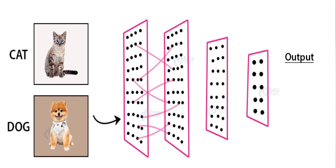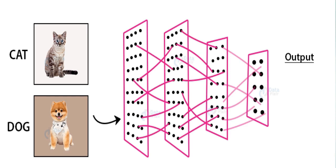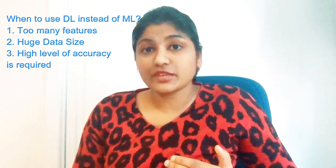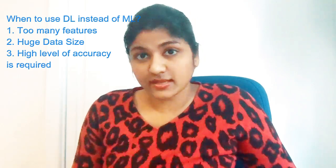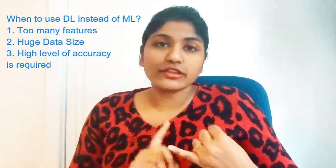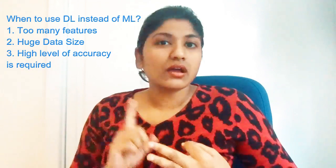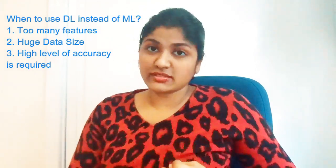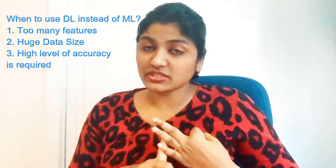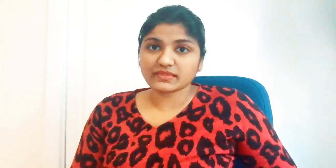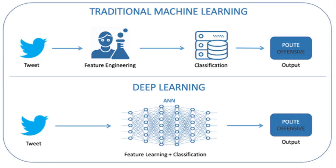When should you use deep learning instead of machine learning? You can use deep learning when machine learning can't deliver desired outcomes — for example, if your data has too many features, if your data is huge in size, or if an extremely high level of accuracy is required. Natural language processing, speech recognition, and image recognition are some applications that use deep learning in practice.